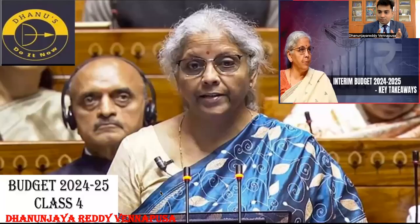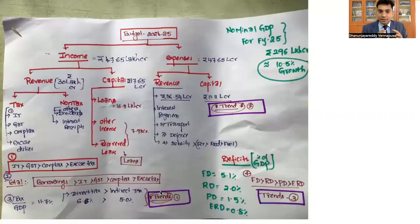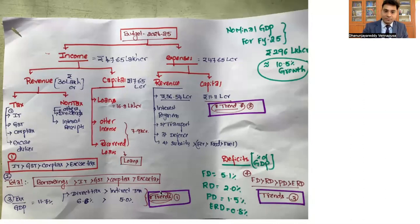Hello guys, welcome to class number 4 of this budget series 2024-25. I have been explaining the components of the budget. In class 3, I explained what are the income sources for the government and the expense sources. What UPSC will ask is what is the total budget, and to arrange the revenue components — revenue incomes and capital incomes — in ascending or descending order, along with the expenses. The flowchart you are seeing is the summary of the entire budget 2024-25.